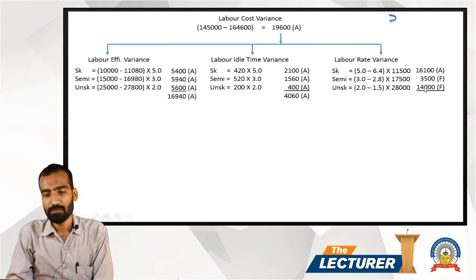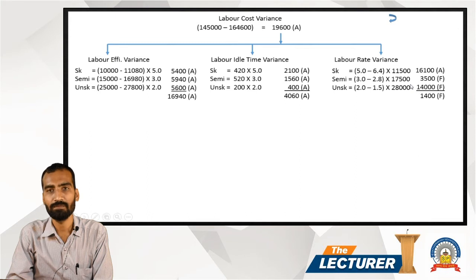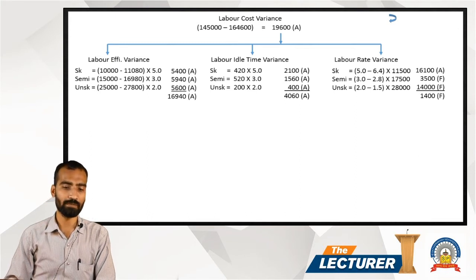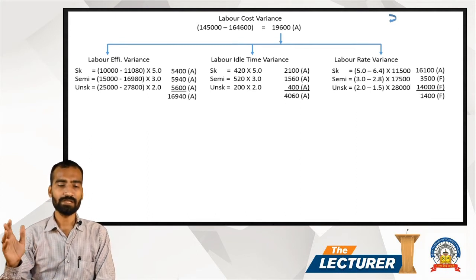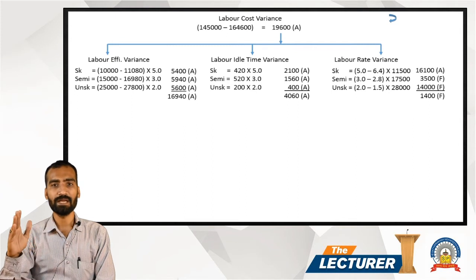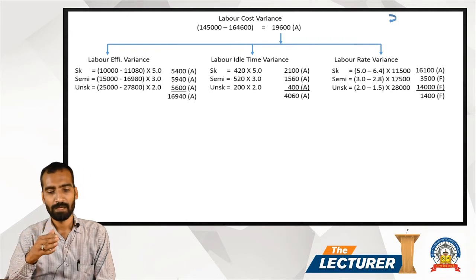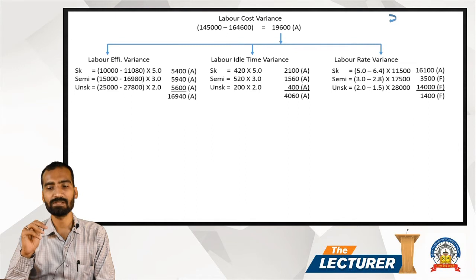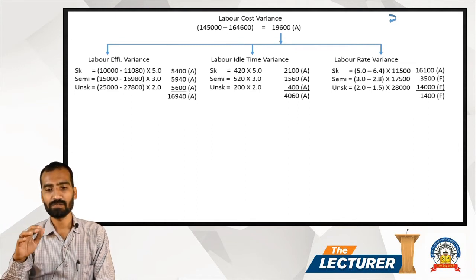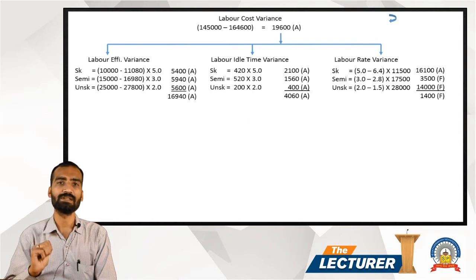Total Labor Rate Variance: favorable amounts of 14,000 and 3,500 net against adverse 16,100 — final answer is 1,400 Favorable. Reconciliation: Efficiency Variance 16,940 Adverse + Idle Time Variance 4,060 Adverse − Rate Variance 1,400 Favorable = 19,600 Adverse, confirming the total labor cost variance.